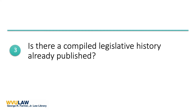In step three, we are still trying to get out of doing this legislative history research ourselves. So if you've determined that the law is ambiguous and that the ambiguity has not previously been resolved by the court, then your task is to find whether someone has already done all the work to assemble the legislative history documents for the legislation in question.